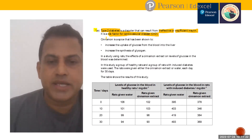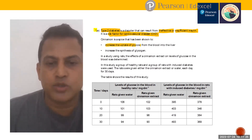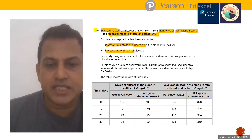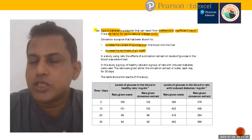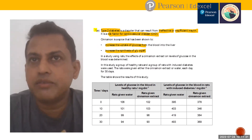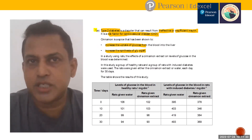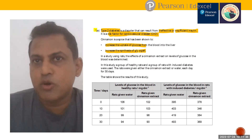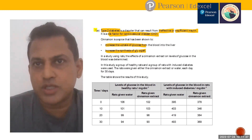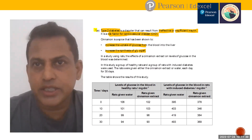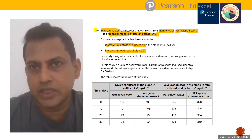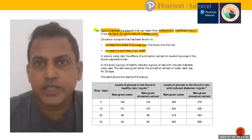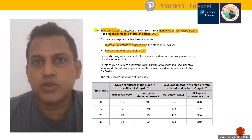Cinnamon is a spice that has been shown to increase uptake of glucose from the blood into the liver and increase synthesis of glycogen. The best effect we expect from insulin after a meal is that a large amount of glucose is converted into glycogen and stored in the liver, so insulin is responsible for this job.